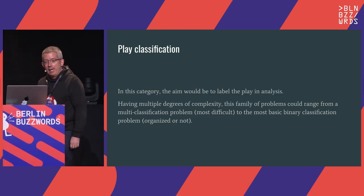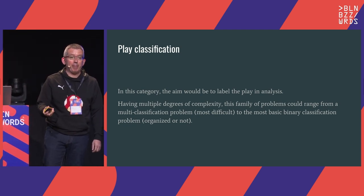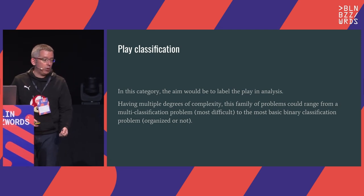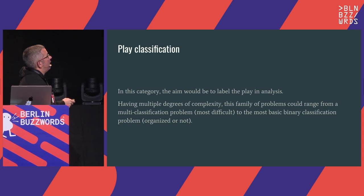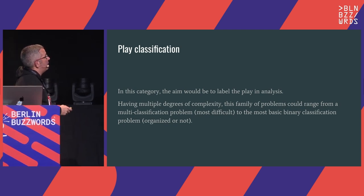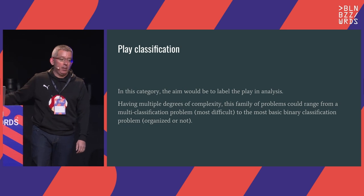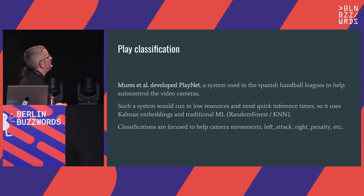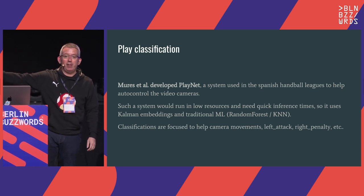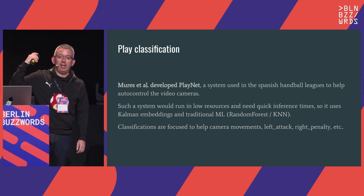What is play classification? Imagine you are doing an offense or attack in any sport — basketball, football, or handball. It's like a choreography, a dance, where one player moves to one location and another does something else in order to score. This is actually what most analysis is about: what are the strategies of the other team? This could be a very simple binary classification problem or a multi-label classification, where you want to categorize multiple kinds of plays.